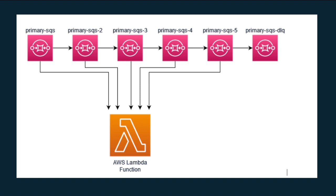If the in-flight message count exceeds 21,000 you will start getting errors. But if you have a smaller number of queues and you are okay with adding multiple queues for your DLQ purposes, then you can definitely use this strategy. Now I will show you a demo of how I have implemented this.